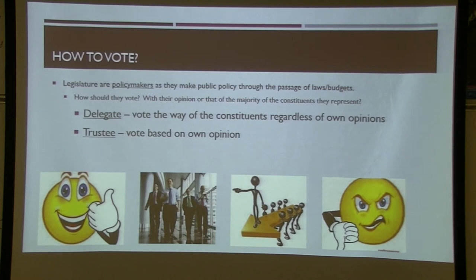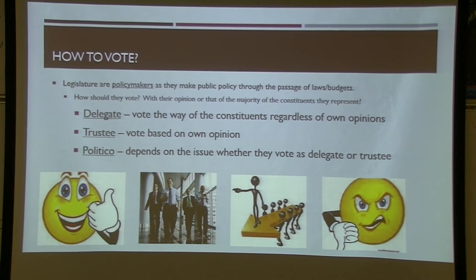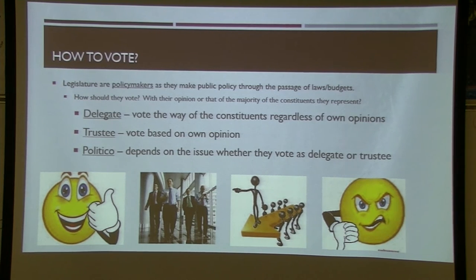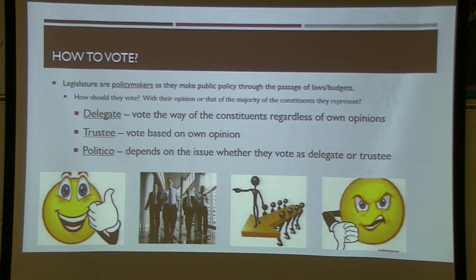Senators can act more as trustees than representatives, especially early in a six-year term, because people may forget by the time reelection comes. The middle ground is a politico — a good example is Daniel Webster. On issues like Medicare, Veterans Affairs, Social Security, or military matters — given the high percentage of retirees and military vets in his district — he votes as a delegate. On issues that local people don't care much about, he acts more as a trustee. This 'politico' pattern is a repeat topic on AP exams.